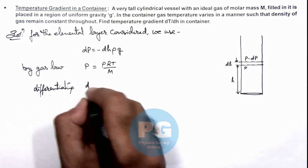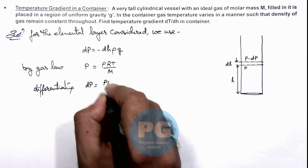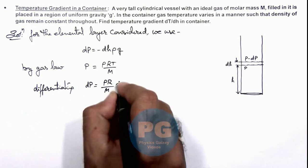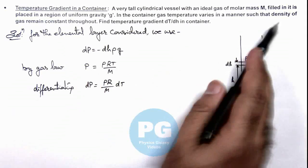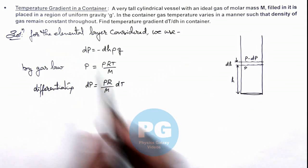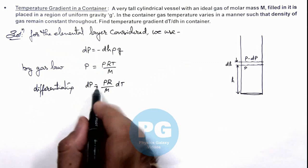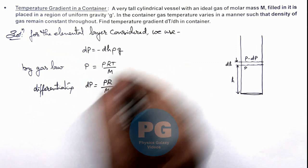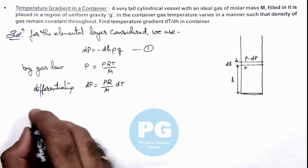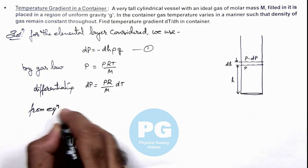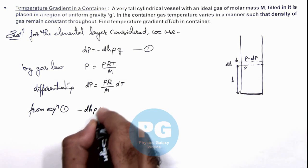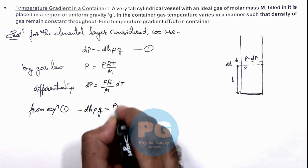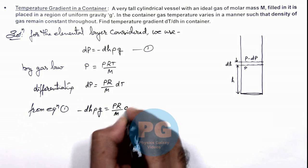As we are given that density of gas remains constant throughout, so in this situation, this dP we can substitute. If this is equation 1, we can write from equation 1: -dh ρg = (ρR/M)dT.